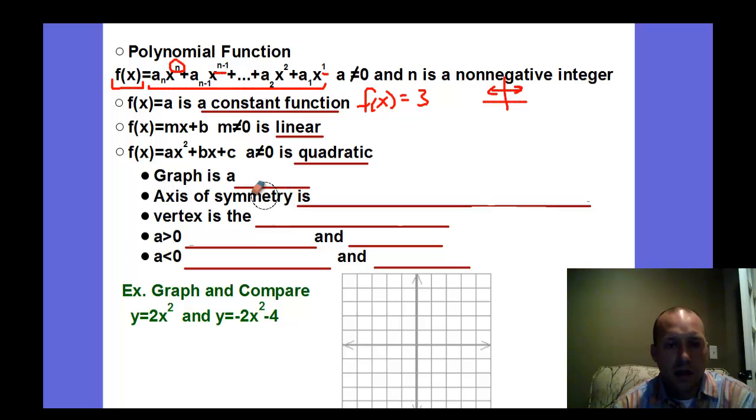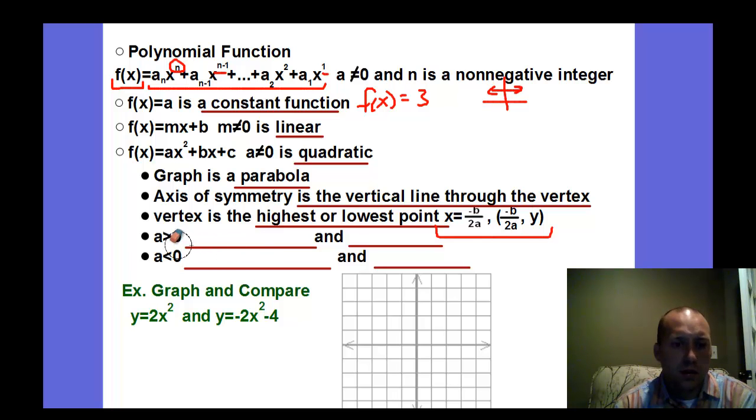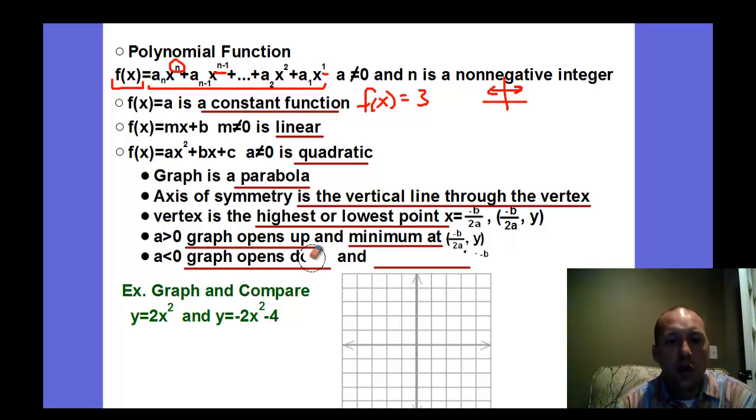So quadratics, they have a graph that is called a parabola. Axis of symmetry is the vertical line through the point called the vertex. And so that point, which is called the vertex, is the highest or lowest point. And to find that, it's always negative b over 2a. That finds the x value of the vertex. That a value, if it's greater than zero, it opens up and has a minimum at that vertex. If a is negative, we should know it's a vertical reflection so it opens down, and it has a maximum then at that vertex again. So negative b over 2a finds that vertex.